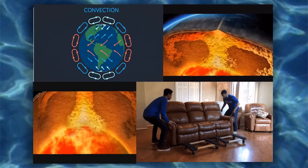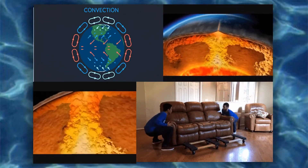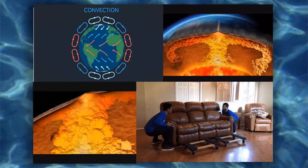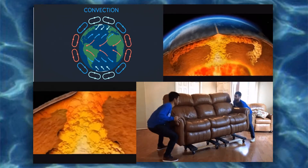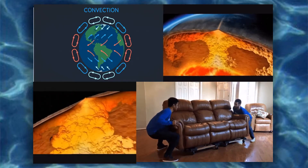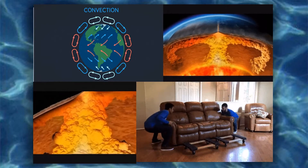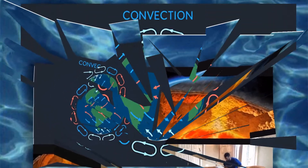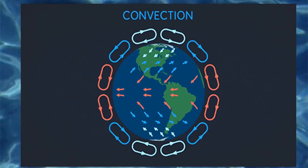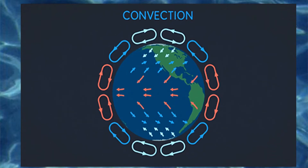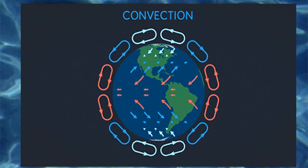The tectonic plates in the lithosphere are carried on the asthenosphere like long, heavy couches moved on huge rollers. Over millions of years, convection currents carry the plates thousands of kilometers. Convection is the transfer of heat due to the bulk movement of molecules within fluids, including molten rock.